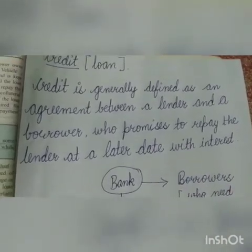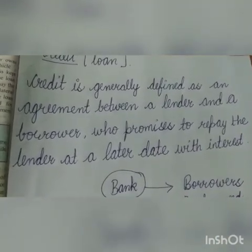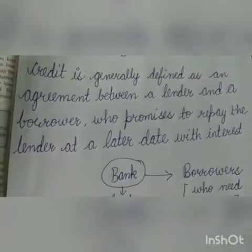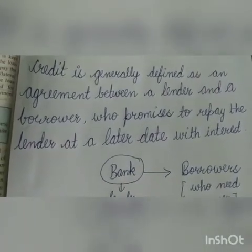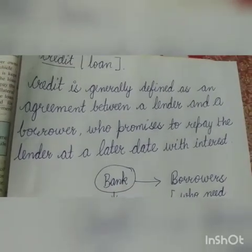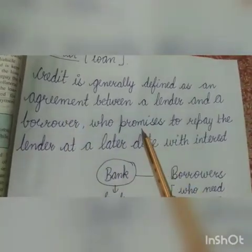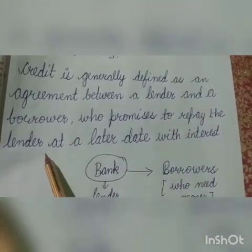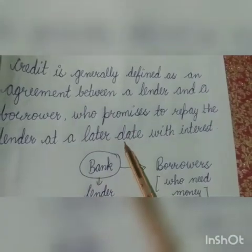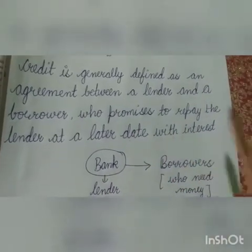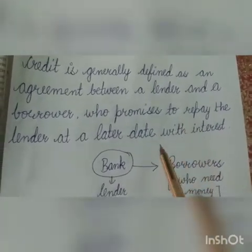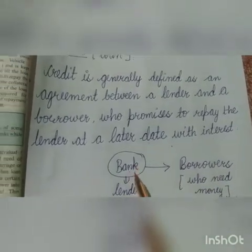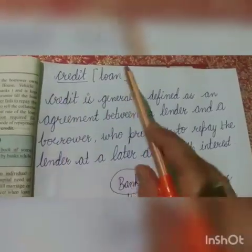Credit loan joh hai ek aisa agreement hota hai joh lender and borrower ki biech mein hota hai. Jis mein lender joh hai — bank joh hai — money joh hai as a loan borrower ko provide kerta hai. Or borrower joh hai promise kerta hai ki woh joh amount hai repay karega lender ko at a later date with interest. Kuch dinnon ke baad woh interest ke sath joh hai lender ko, bank ko, money repay karega. To credit hum simply kya bulte hai — loan.